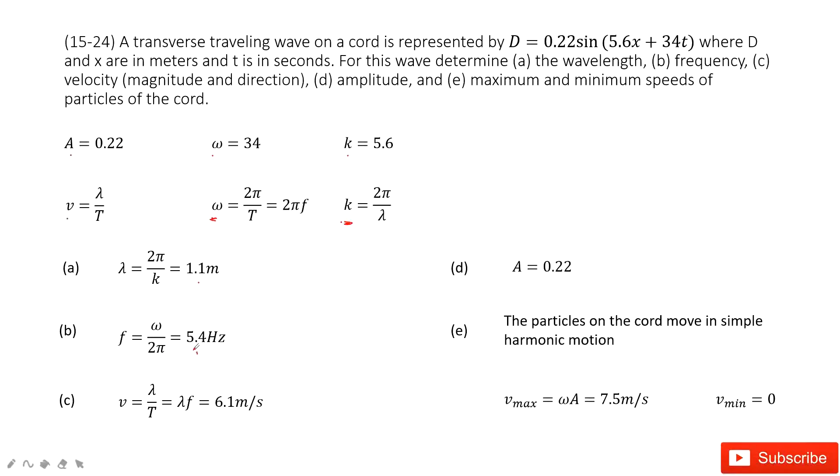Next, we need to find the velocity. Velocity is wavelength divided by period. Since 1 over period is frequency, we use this to get the answer.